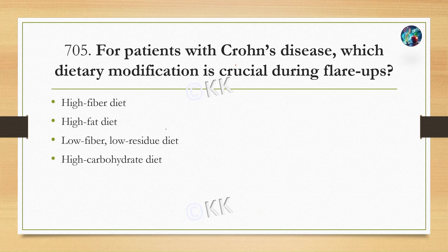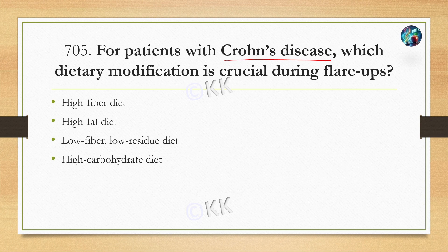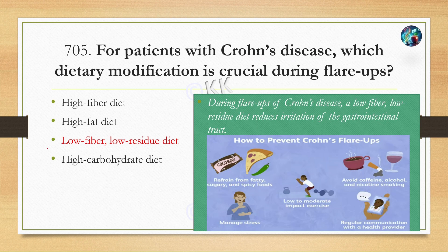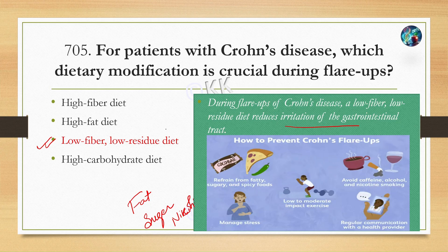For a person with Crohn's disease, which dietary modification is crucial during flare-ups? Option A: high fiber diet. Option B: high fat diet. Option C: low fiber, low residue diet. Option D: high carbohydrate diet. Flare-up means burning sensation in the GI tract. We need a low fiber, low residue diet to reduce irritation of the GI tract. Avoid fatty, sugary, and syrupy foods, as well as coffee, alcohol, and nicotine. Regular exercise can also help manage symptoms.